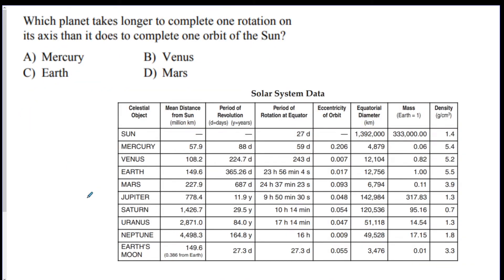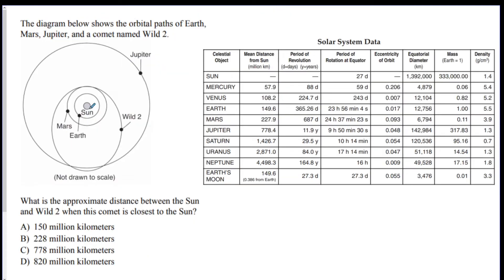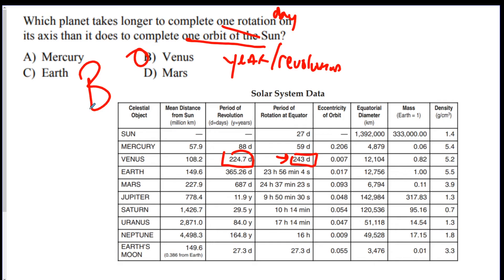Which planet takes longer to complete one rotation on its axis than it does to complete one orbit of the sun? One orbit of the sun is the revolution, and one rotation is the day. There's only one planet that does that — Venus has a longer rotation than its revolution. B is the best answer. Check Mercury, Earth, and Mars — they do not have a longer period of rotation than revolution, so just compare the numbers in the chart.